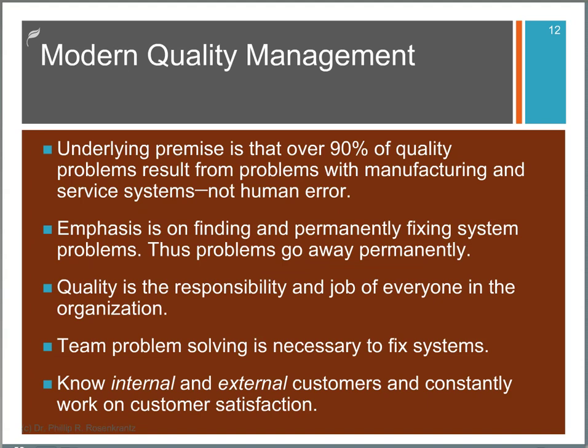So let's wrap up this part by pointing out that modern quality management is rooted in understanding statistical process control. The underlying premise is that most problems are with the system. Ninety percent or more of the problems are caused by the system and the way it is designed, not human error. So we want to fix the system, get everyone involved in the system, and find the permanent solutions. So quality is the responsibility of everyone. It also leads to the use of teams to solve problems because properly formed teams have a better understanding of the overall system and how it relates. How it's connected and all the internal and external customers involved. So everyone needs to understand who their customer is and what the customer needs and how good of a job they can do at providing what the customer needs.